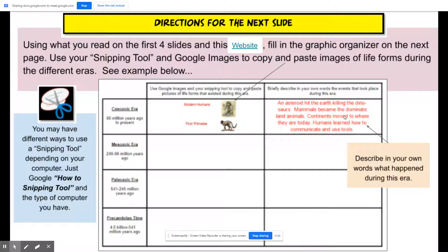So I wrote: an asteroid hit the earth killing the dinosaurs, mammals became the dominant land animals, continents moved to where they are today, humans learned how to communicate and use tools. So that's my description using my words. Please do not copy this. Use your own words.